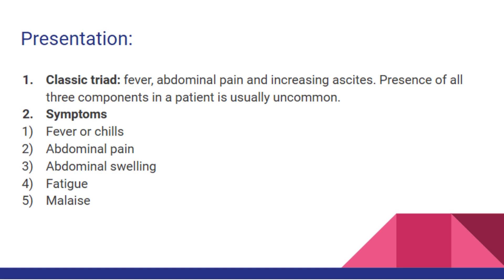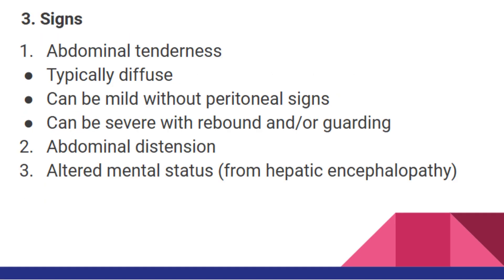Number 2: Symptoms include fever or chills, abdominal pain, abdominal swelling, fatigue, and malaise. Number 3: Signs include abdominal tenderness, which is typically diffuse — it can be mild without peritoneal signs, or severe with rebound and/or guarding. Other signs include abdominal distension and altered mental status from hepatic encephalopathy.